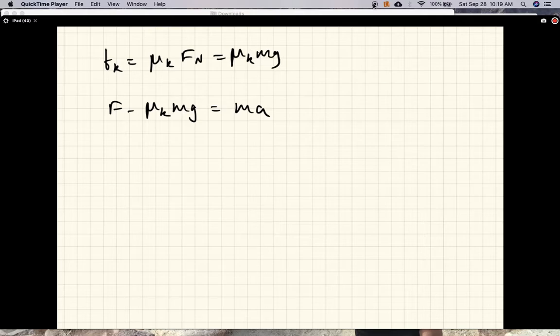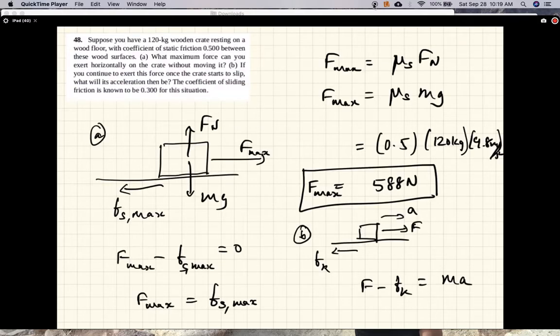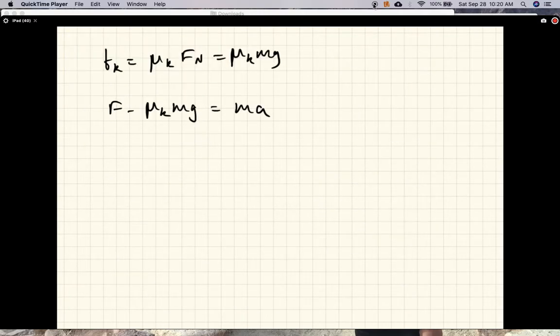Alright, so acceleration is what we want to find. What is acceleration then? So we're trying to find what will be the acceleration after it starts sliding. Okay, so the acceleration is given by F minus mu_k mg divided by m.